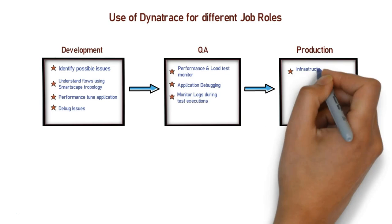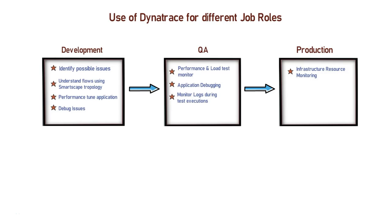Dynatrace can monitor complete infrastructure resources, and on detecting any anomaly, Dynatrace can alert you with notifications through multiple channels. Apart from this, your application can also be monitored for performance degradation. Dynatrace can monitor the availability of your application across different geographical locations by generating synthetic traffic from across the globe. These are the most appreciated and commonly used features of Dynatrace, and it has many more features which help you to monitor your application and infrastructure.